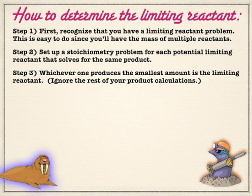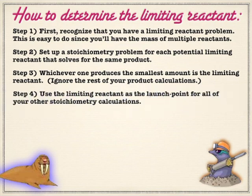Now if all you have to do is figure out what the limiting reactant is, there are simpler ways to do it, and I'll show you a couple. But I found this is the least confusing method for students: solve for a common product, apples to apples, and see which reactant makes the least of that product. Once you figure out what limits you, pretend there is enough of everything else and just continue your stoichiometry as normal.